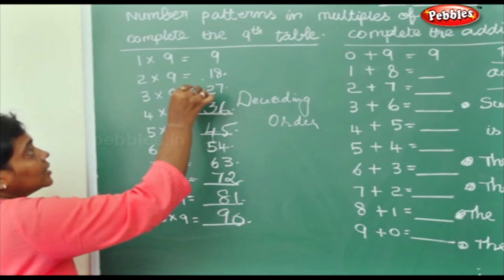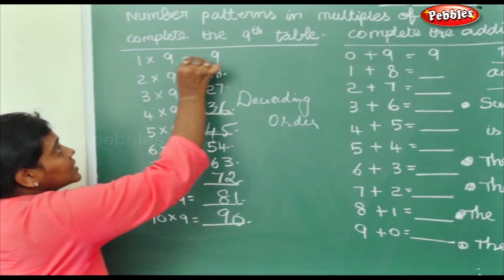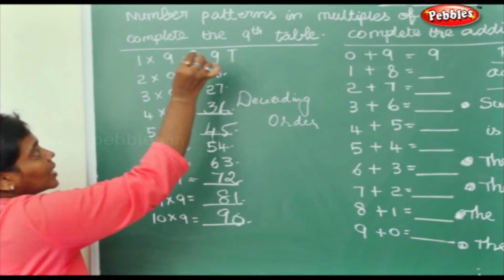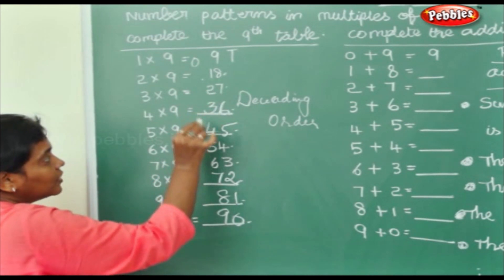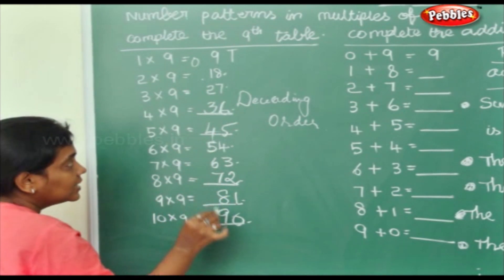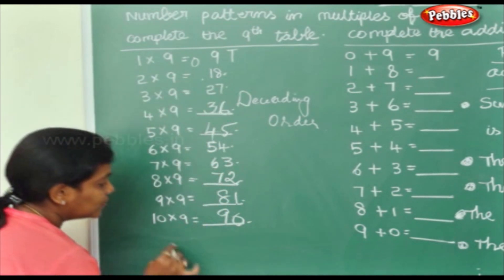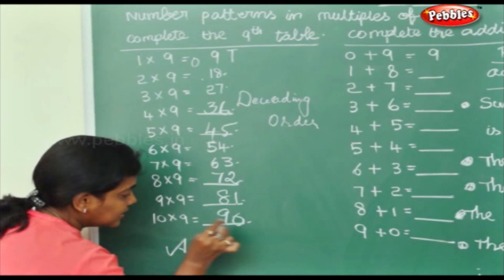Now here, this is your 1's place, this is your 10's place. Now here in the 1's place if you see 1, 2, 3, 4, 5, 6, 7, 8, 9, small to big which means this is ascending order.